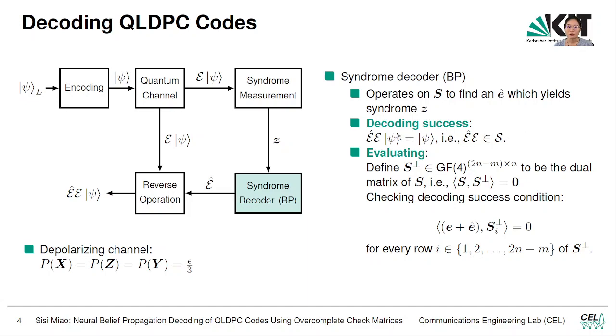To check this, in optimizing a decoder we want to evaluate that the decoding is indeed successful. What we can do is use the dual matrix of S, which we call S-dual. This is the kernel of S with respect to the trace inner product that we defined earlier. Because S-dual is the kernel of S, it is sufficient to say if E plus E-hat is orthogonal to every row of S-dual, then we can say that E plus E-hat is indeed a stabilizer.